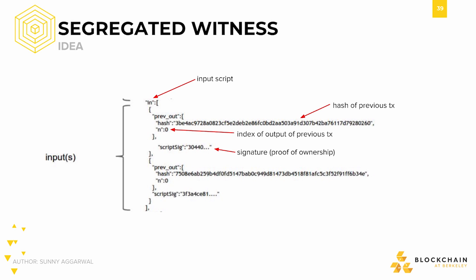SegWit is short for Segregated Witness and was originally created to solve an issue in Bitcoin called transaction malleability, which we'll mention later. Beyond solving transaction malleability, SegWit also allowed Bitcoin to scale up by decreasing effective transaction size. The way SegWit decreases transaction size is by separating, or segregating, digital signatures from within each transaction.